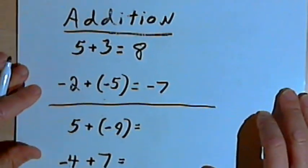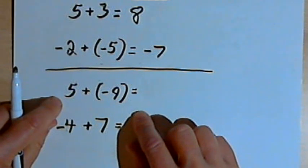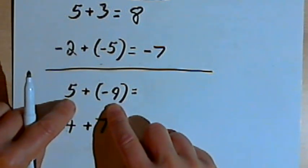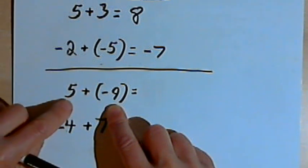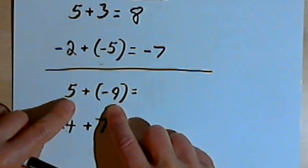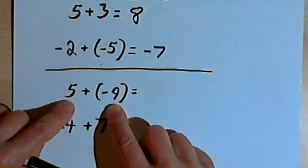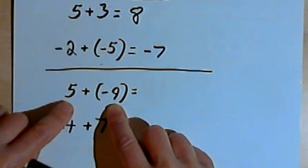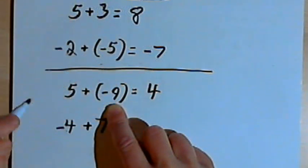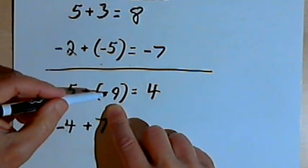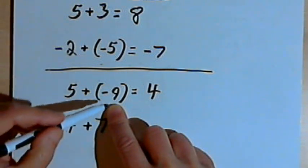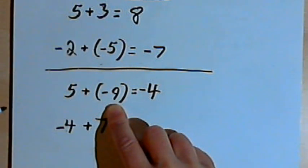When we get to situations where one sign is positive and one sign is negative, we have to work this a bit differently. If we have different signs, like positive 5 plus negative 9, here's what we do. We look at just the numbers without the signs — the 5 and the 9 — and we take the difference between those two numbers. The difference between 5 and 9 is 4. Whichever number was bigger, we use the sign that that number had. So 9 is bigger than 5, and the 9 was negative, so the answer is going to be negative 4.